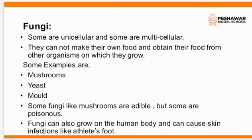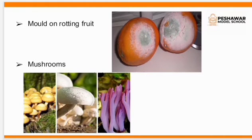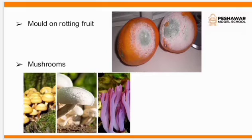Fungi can cause athlete's foot. You can see here molds on rotting fruit. In this picture you can see molds on an orange peel. And look here at mushrooms — there are basically many kinds of mushrooms, but botanists can identify which mushrooms are poisonous and which are edible.